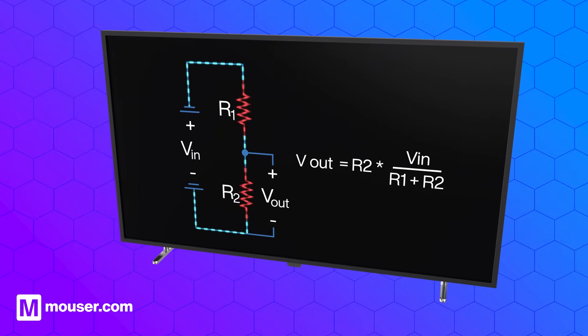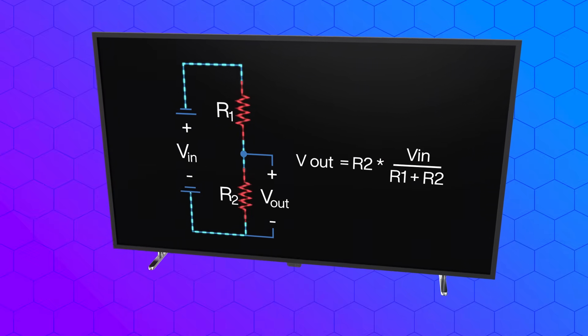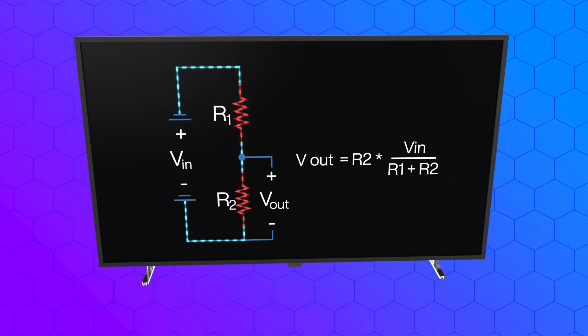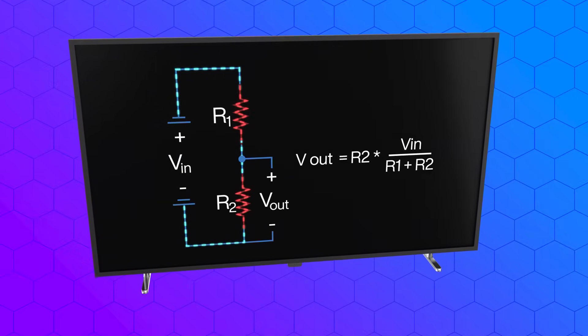Once the total current is known, the voltage across R2 can be calculated. The desired output voltage is set by the ratio of resistance values R1 and R2.